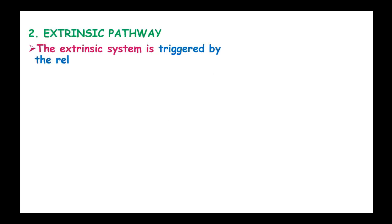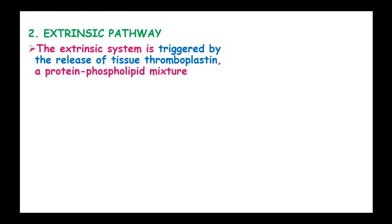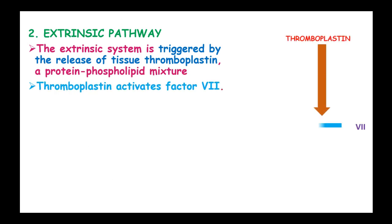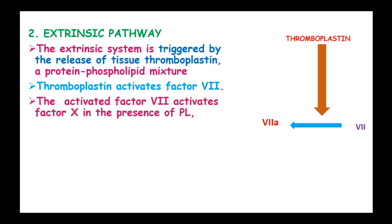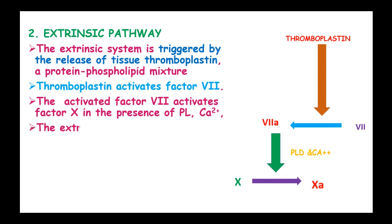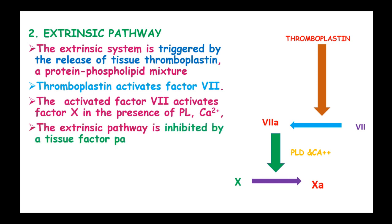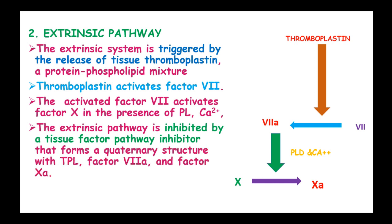In the extrinsic system or pathway, the extrinsic system is triggered by the release of tissue thromboplastin, a protein-phospholipid mixture. Thromboplastin activates factor VII, and the activated factor VII activates factor X in the presence of phospholipids and calcium ions. The extrinsic pathway is inhibited by a tissue factor pathway inhibitor that forms a quaternary structure with thromboplastin and activated factor VII and factor X.